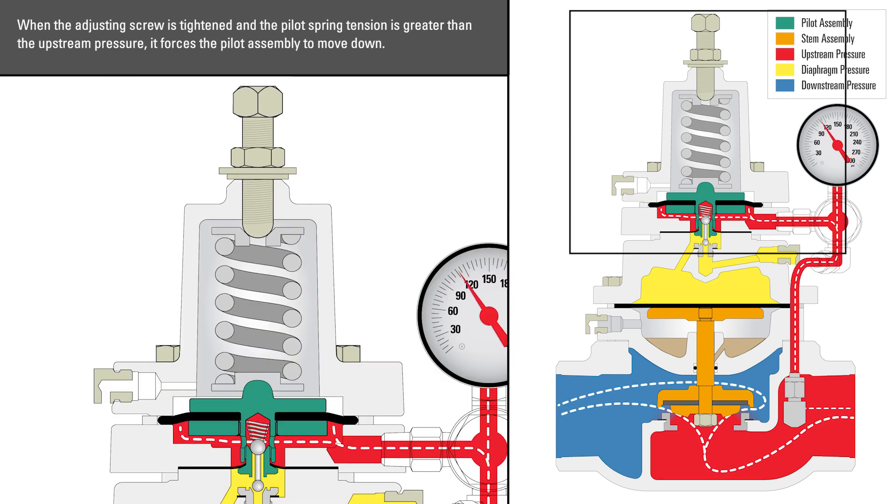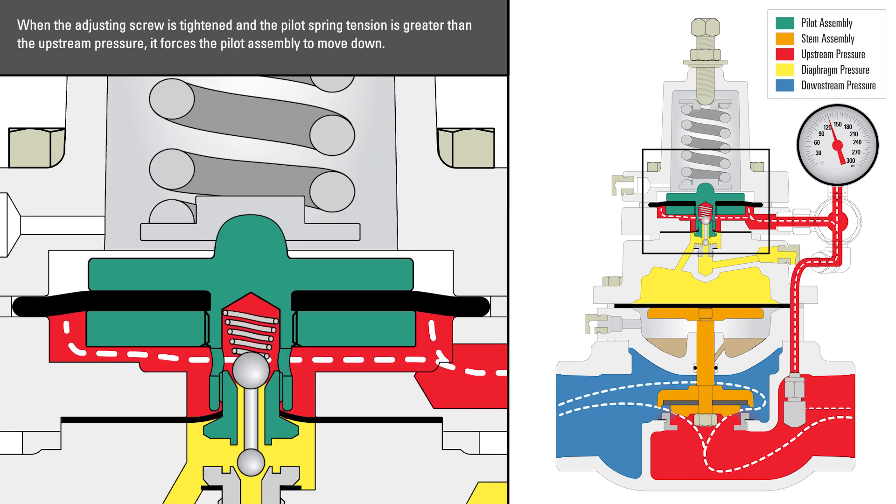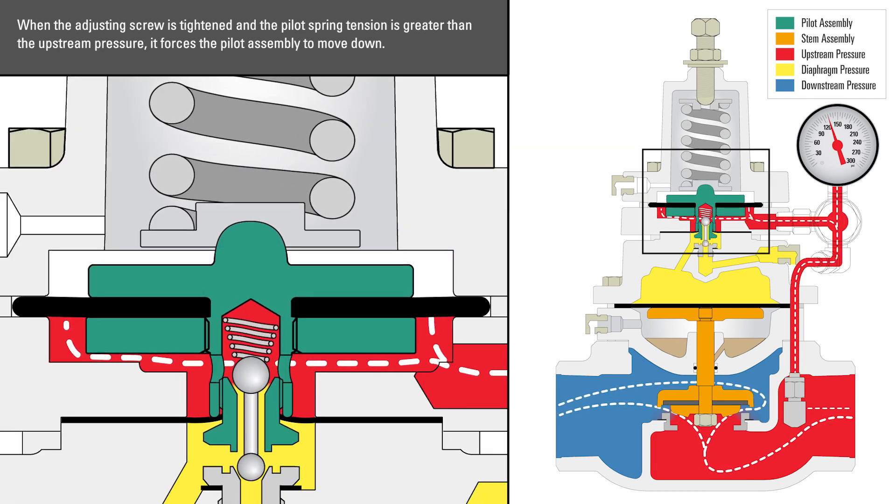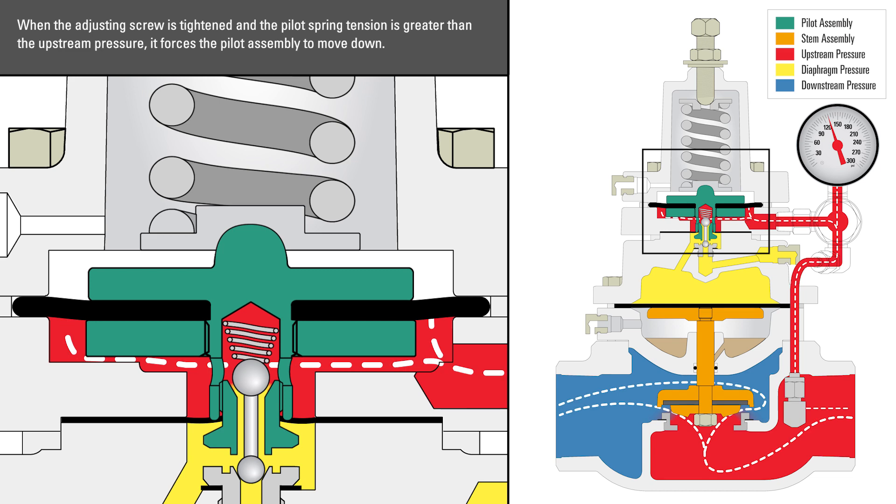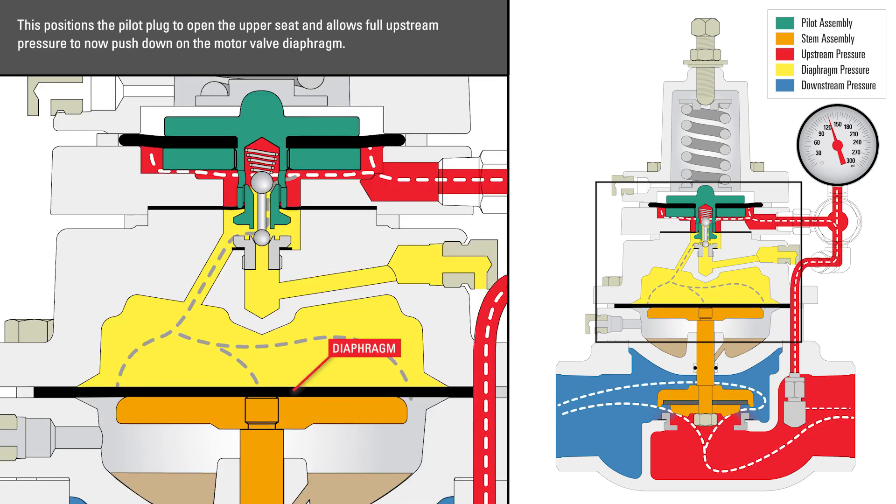When the adjusting screw is tightened and the pilot spring tension is greater than the upstream pressure, it forces the pilot assembly to move down. This positions the pilot plug to open the upper seat and allows full upstream pressure to now push down on the motor valve diaphragm.